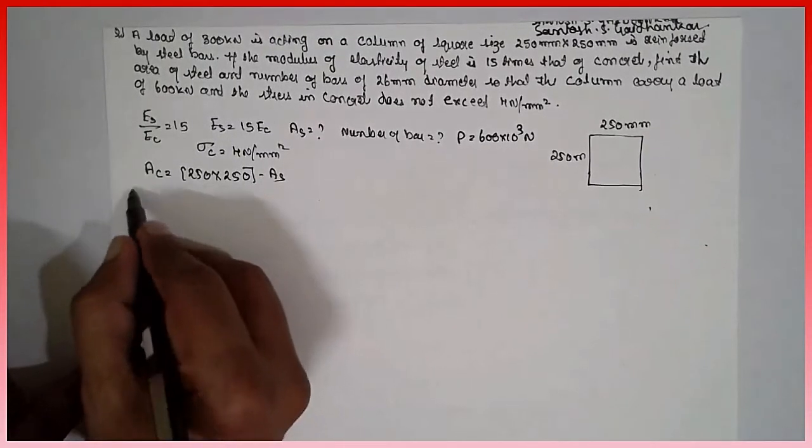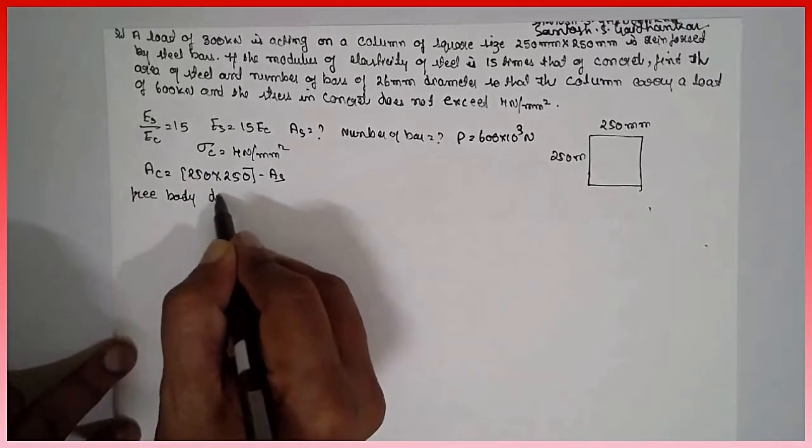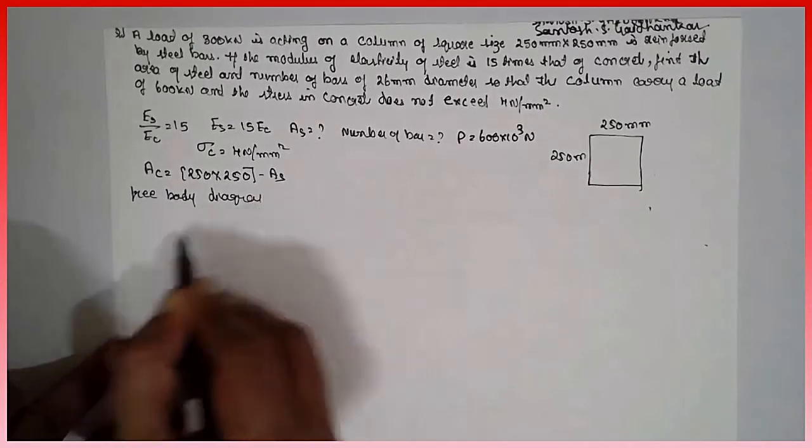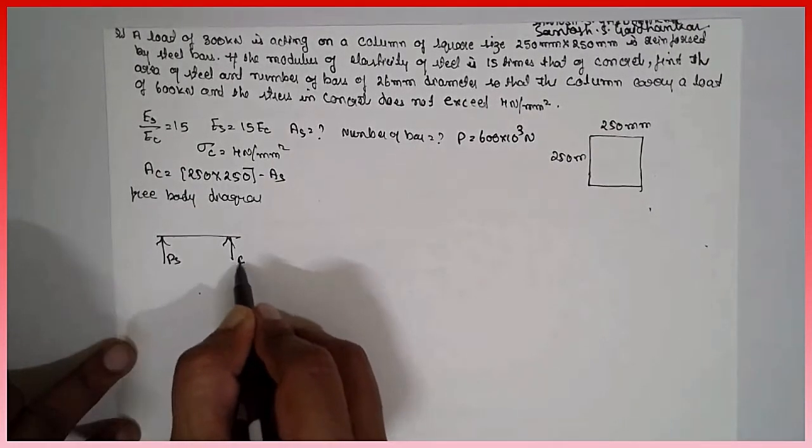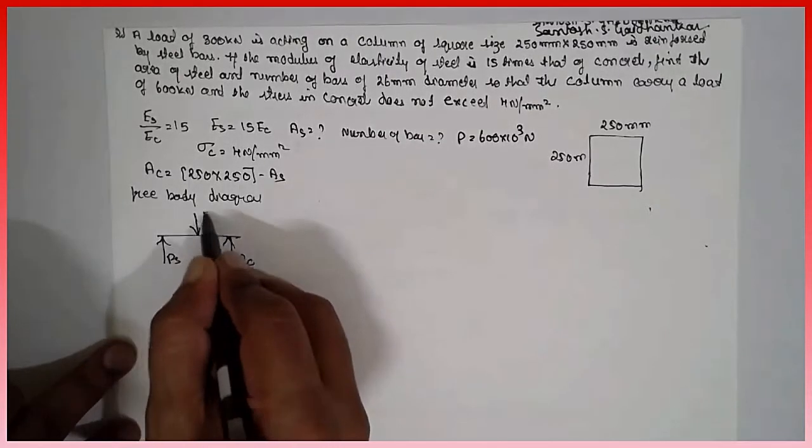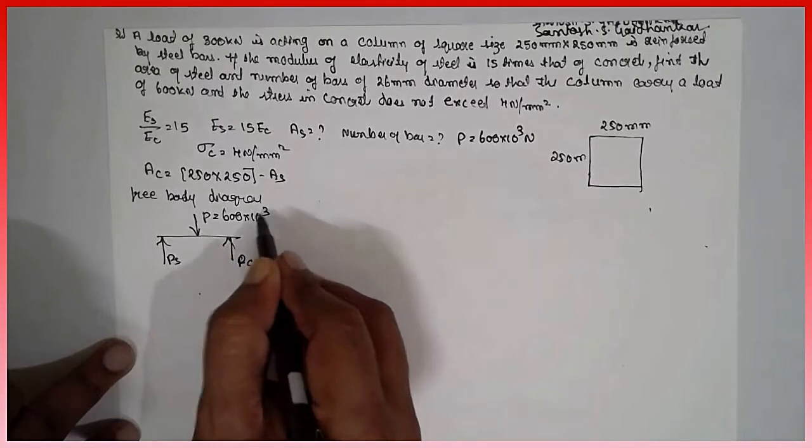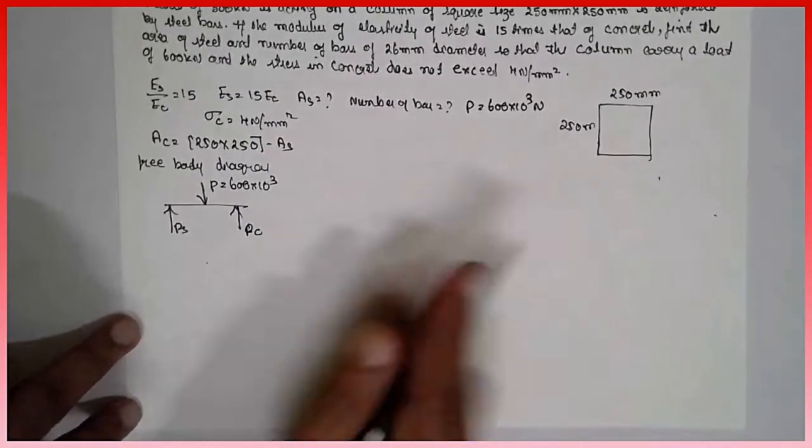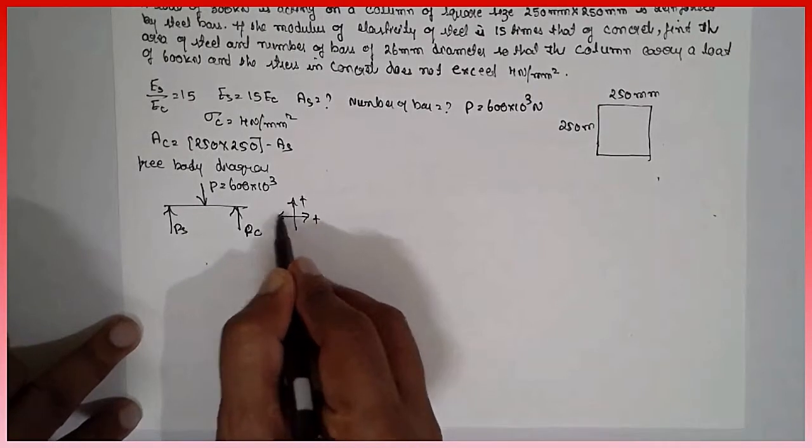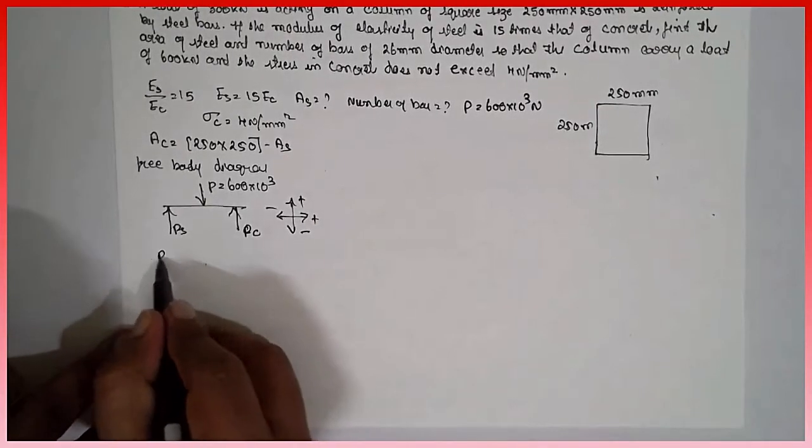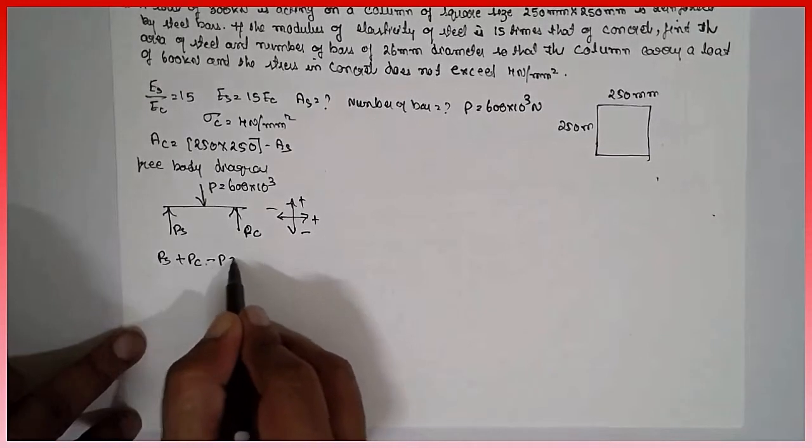Next, free body diagram. We are assuming Ps will act upward, Pc will also act downward, 600 in order to find out the area. As per the diagram, Ps plus Pc minus P is equal to zero.